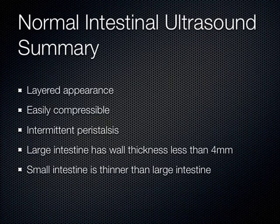To summarize intestinal ultrasound: normal bowel has a layered appearance, is easily compressible, and shows intermittent peristalsis. Large intestine wall is less than 4 millimeters; small intestine is somewhat thinner than that.